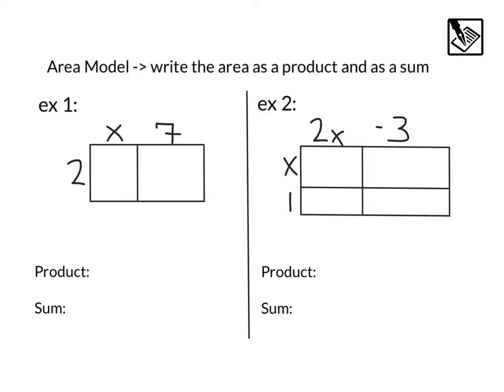To help us out a little bit with multiplying polynomials, we're going to be making area models. Here we've got two rectangles. We both have a width of 2, and we've got a length of x and a length of 7. So if we were going to find the area of this, we would do 2 times x plus 7, because this whole length here is x plus 7. That would be written as a product.